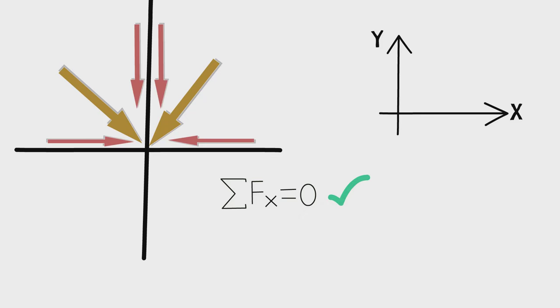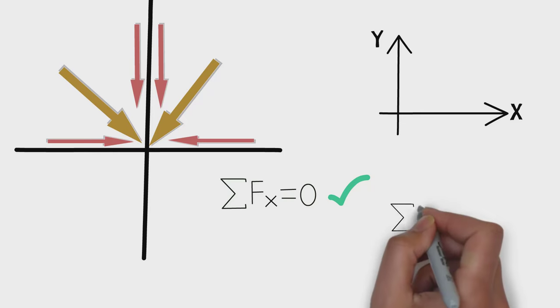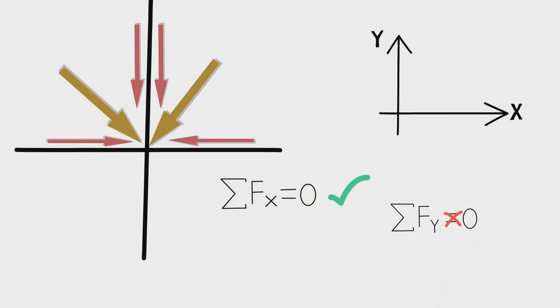Now let's assume we have force in this member like this. Their X component will cancel each other, but their Y component will add up. Because we don't have any external forces to counter this force in Y axis, it will not be at equilibrium condition. That's why we can't have a force in this member.